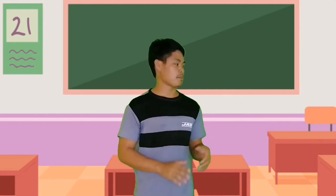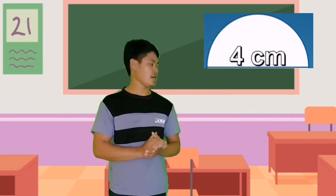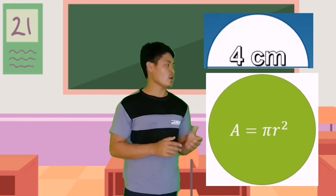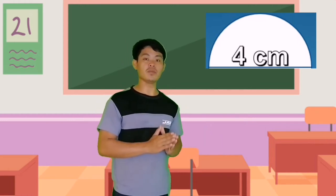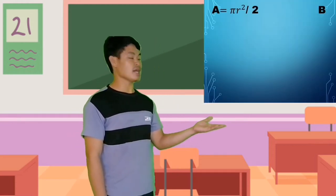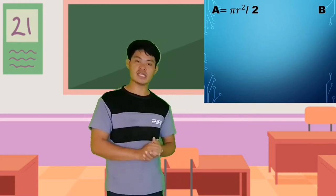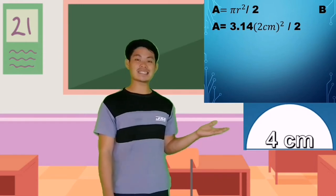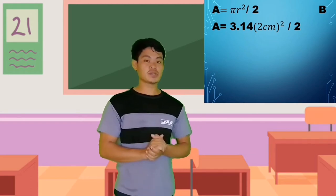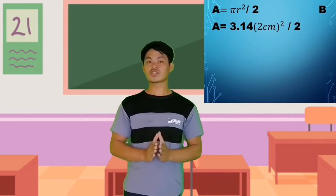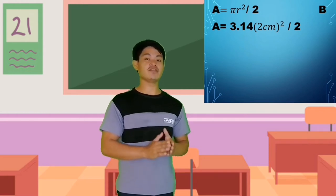Now let us move on to shape B, the half circle. For a half circle, we use the formula for a circle — area equals pi r squared — then divide by 2. So our formula becomes area equals pi r squared divided by 2. We substitute pi as 3.14, and since the diameter is 4 cm, the radius is 2 cm.